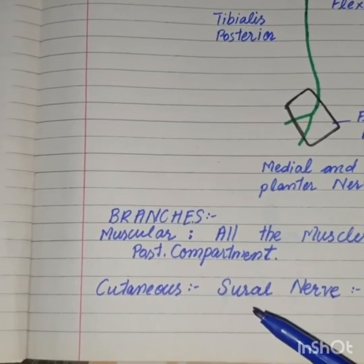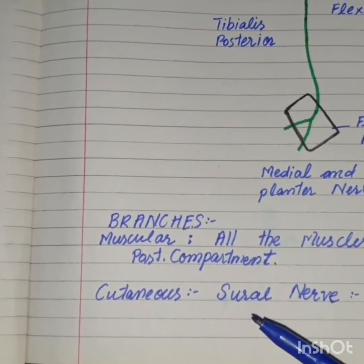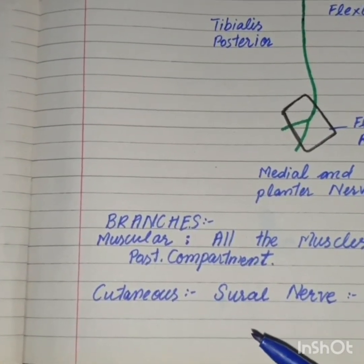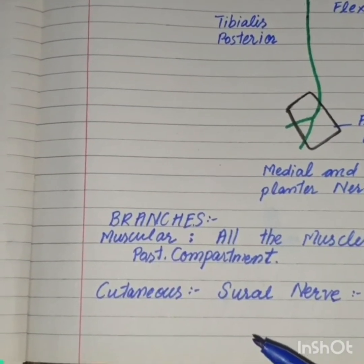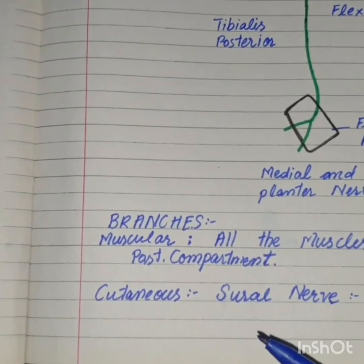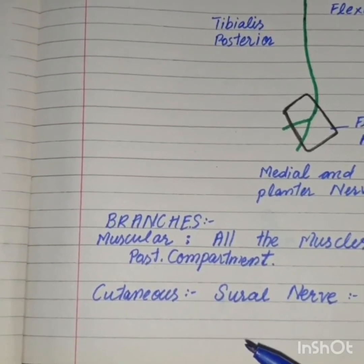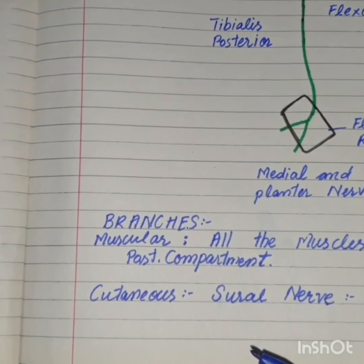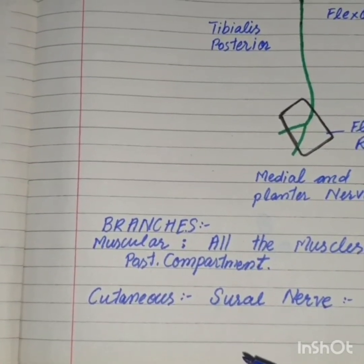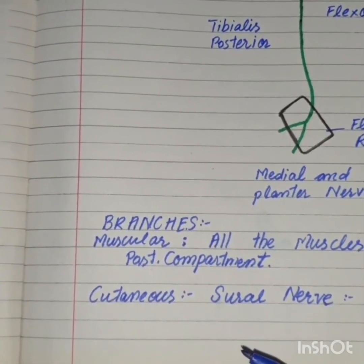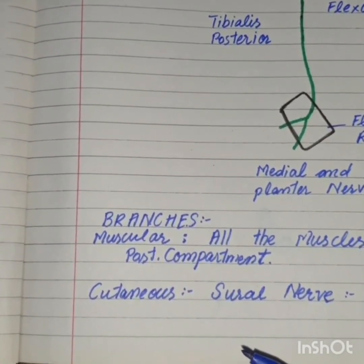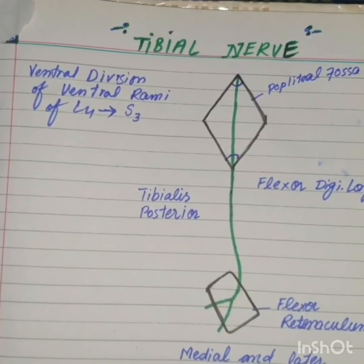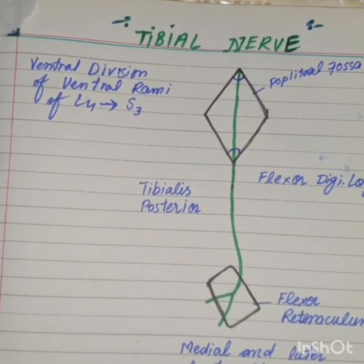At last, we are going to talk about the clinical importance of the tibial nerve. If the tibial nerve gets paralyzed, there is a loss of muscular supply to the muscles of the posterior compartment, or the flexor compartment, of the leg. So there is a loss of flexion at the foot. This is all about the tibial nerve.